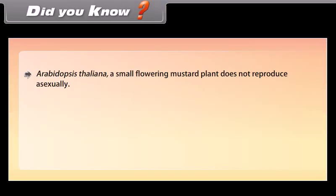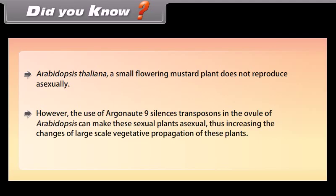Did you know? Arabidopsis thaliana, a small flowering mustard plant, does not reproduce asexually. However, the use of Argonaute 9 silences transposons in the ovule of Arabidopsis, which can make these sexual plants asexual, thus increasing the chances of large-scale vegetative propagation of these plants.